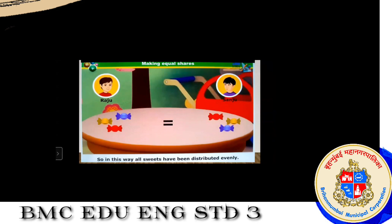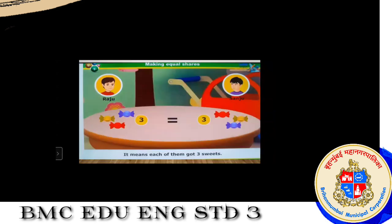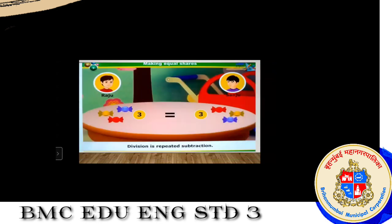All sweets have been distributed equally. So how many chocolates did each get? One, two, three — Raju got three sweets and Sanju also got three sweets. Each of them got three sweets. From this, we can say that division is repeated subtraction. Division is repeated subtraction — making equal shares.